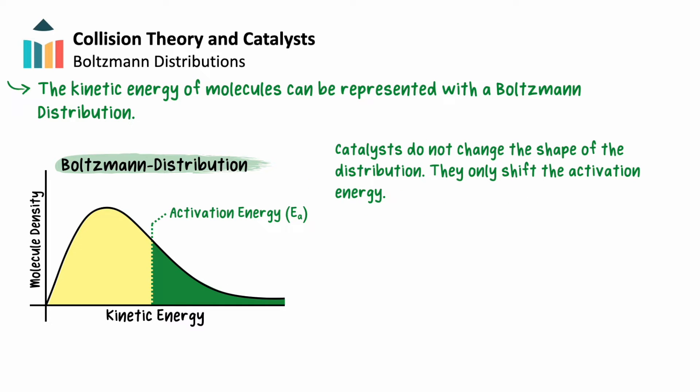If a catalyst is present, the shape of the distribution stays the same. However, the value of the activation energy is lowered. The vertical line representing EA shifts to the left. With a larger proportion of molecules exceeding this value, there are now more successful collisions in the reaction.